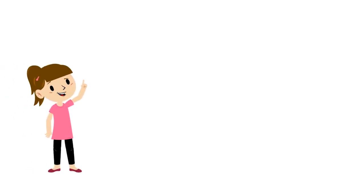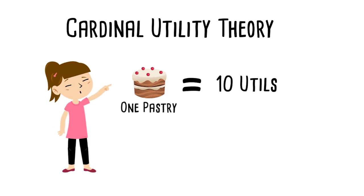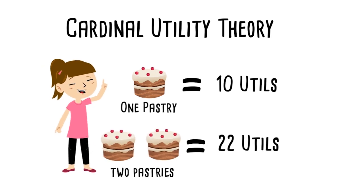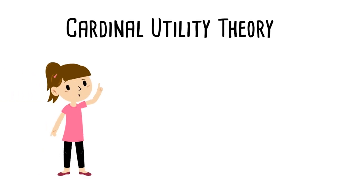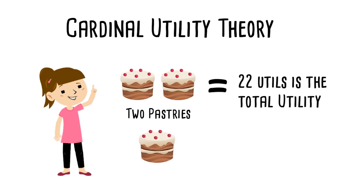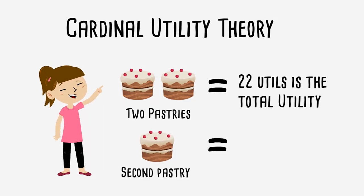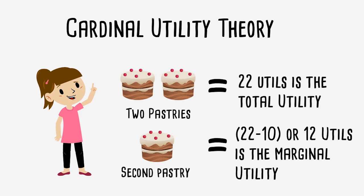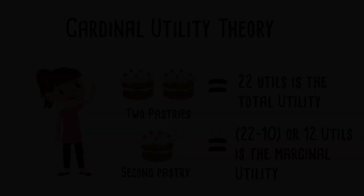Thus, if one pastry gives 10 utils of satisfaction and two pastries give 22 utils of satisfaction, then the total utility is 22 utils from the consumption of two pastries, and the marginal utility is 12 utils — that is the utility derived from consuming the second unit.